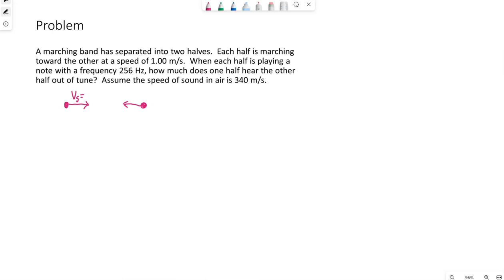So if I say the half on the left is the source, they would be traveling in my picture to the right at 1 meter per second. Then we'll be talking about this other half on the right that's moving to the left at 1 meter per second.